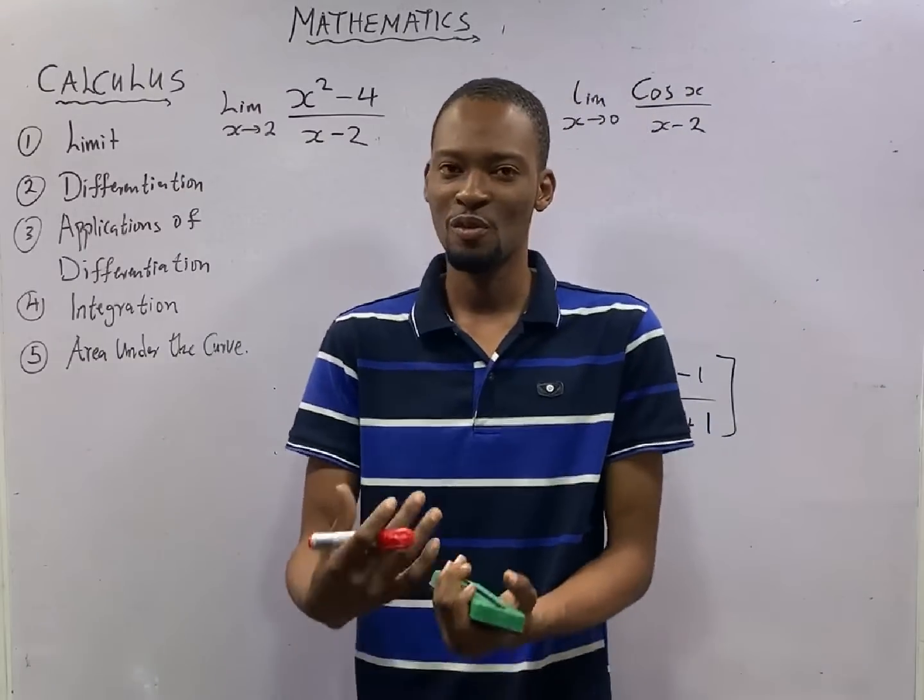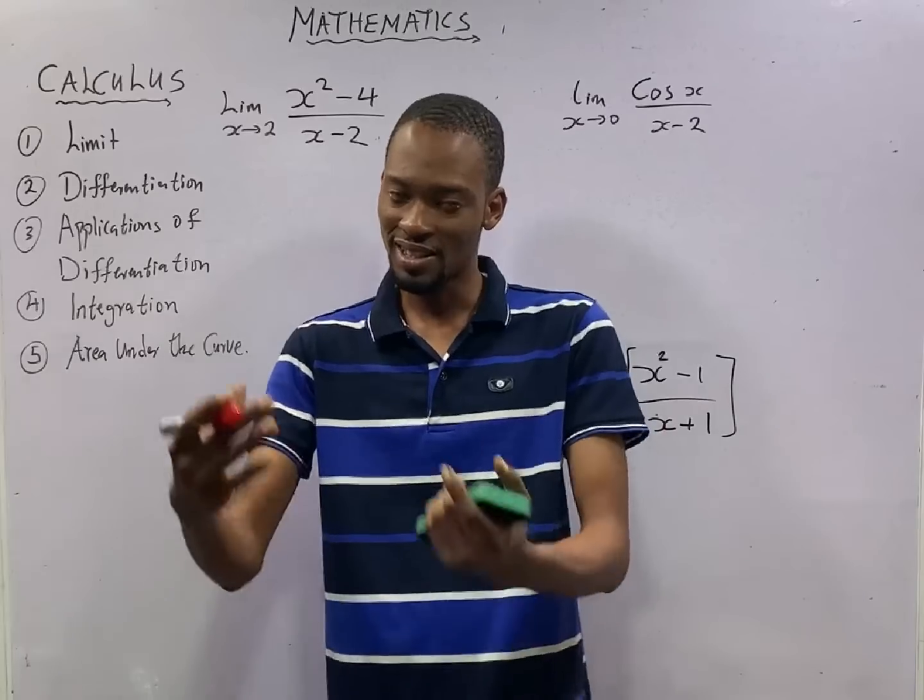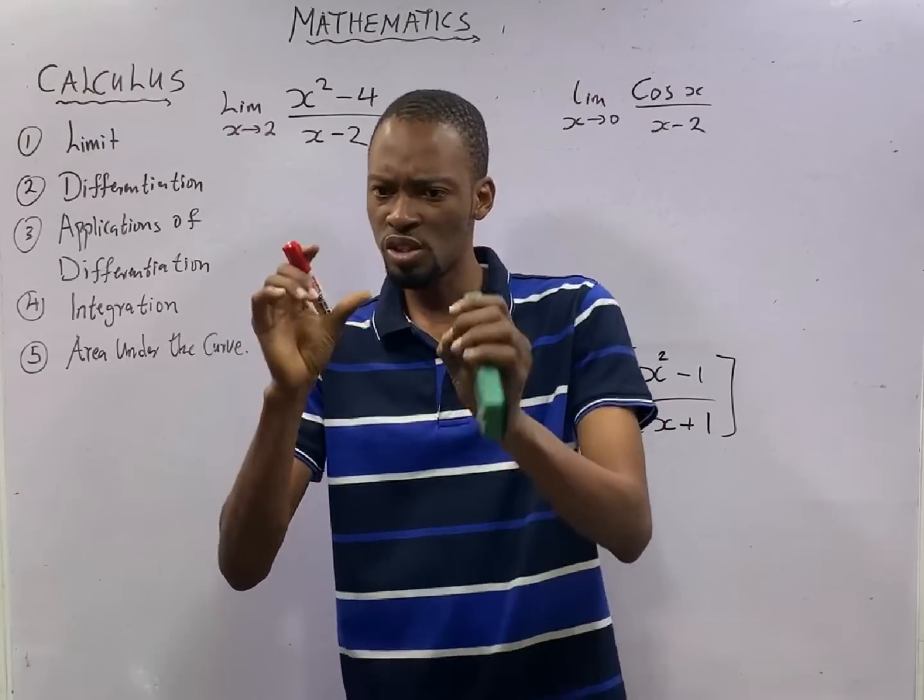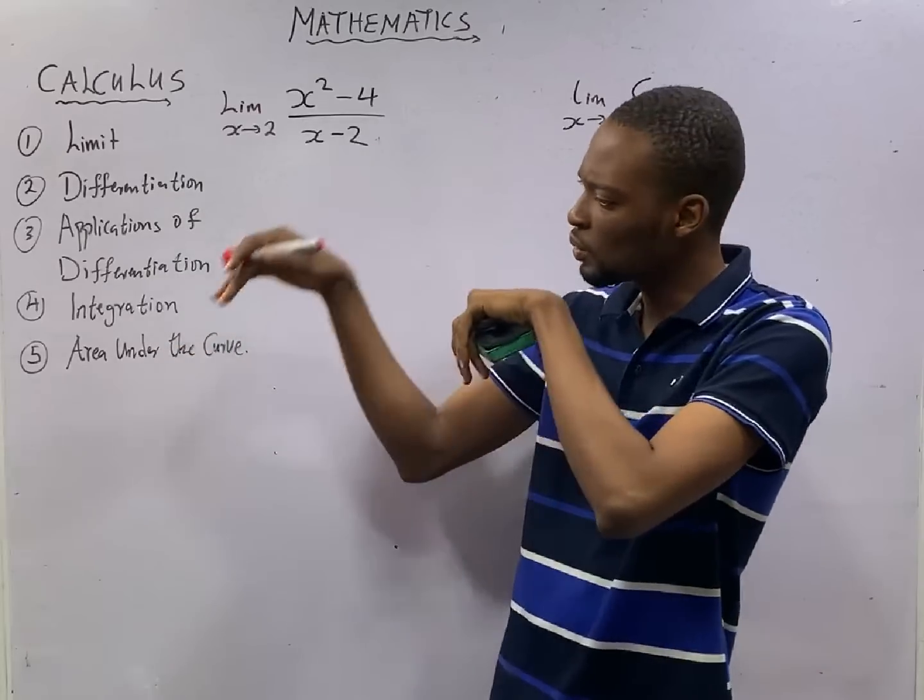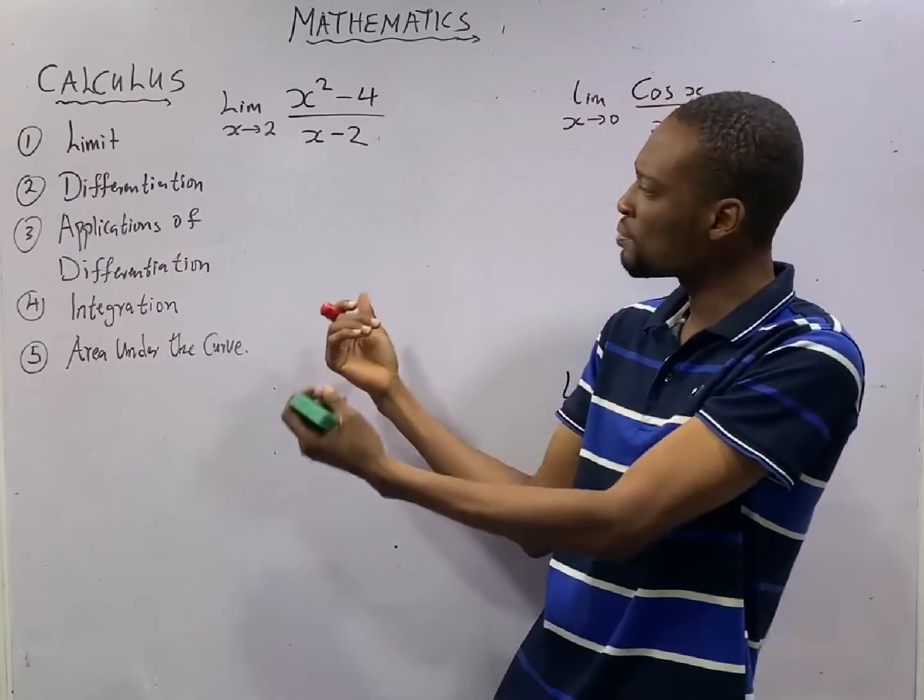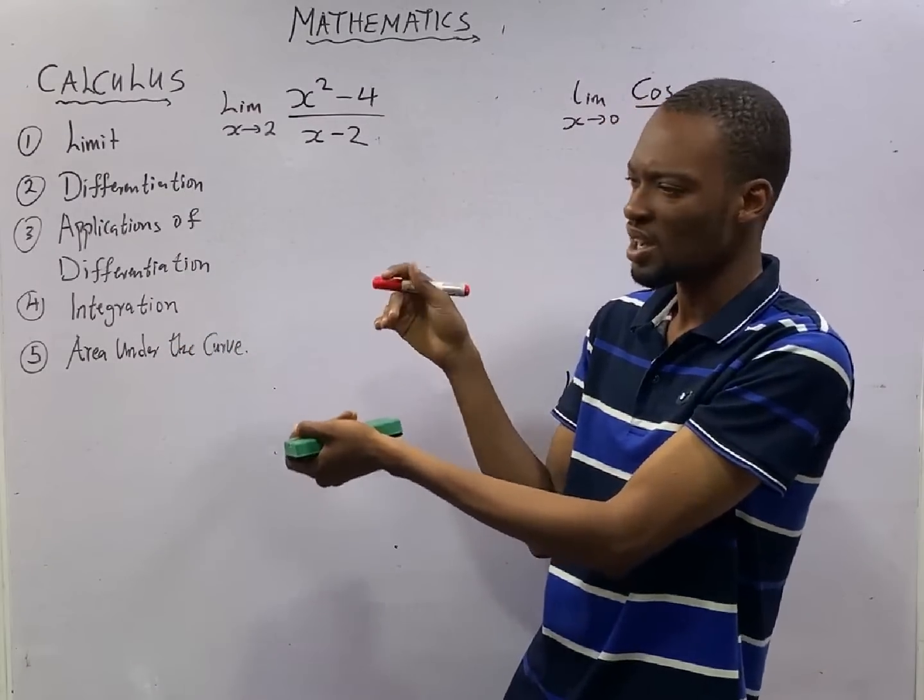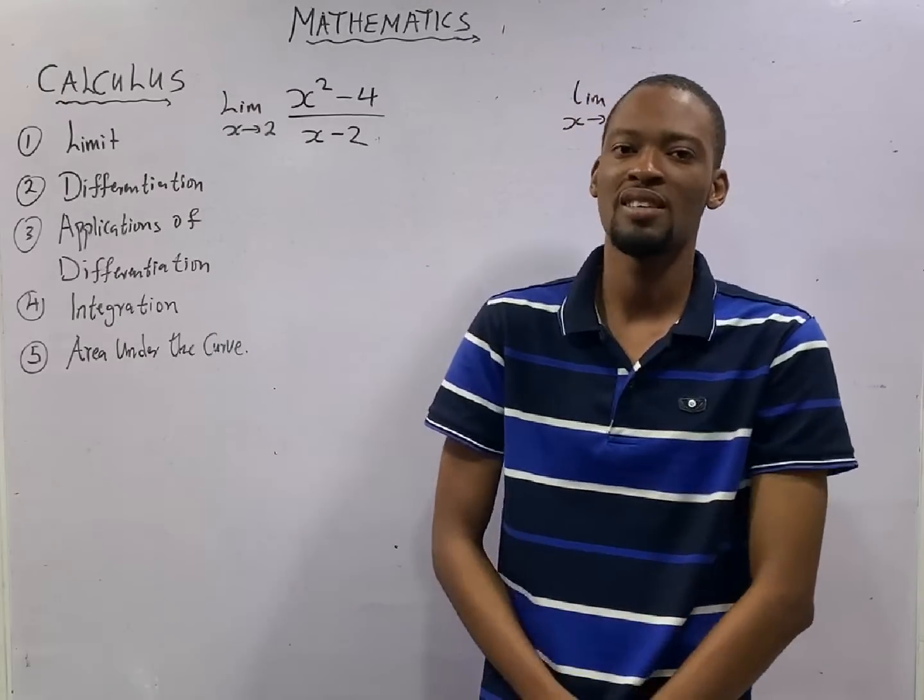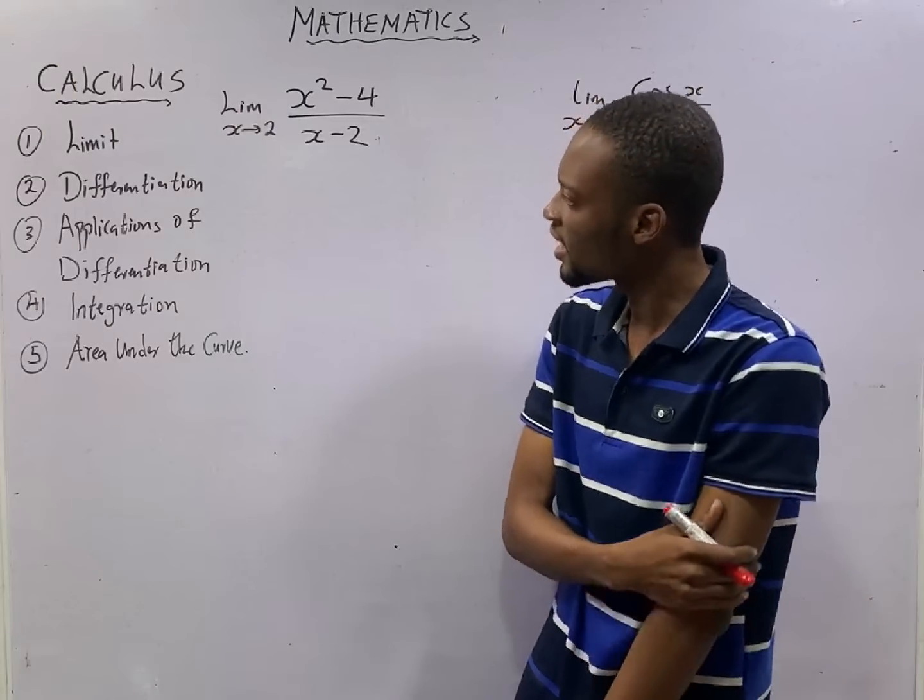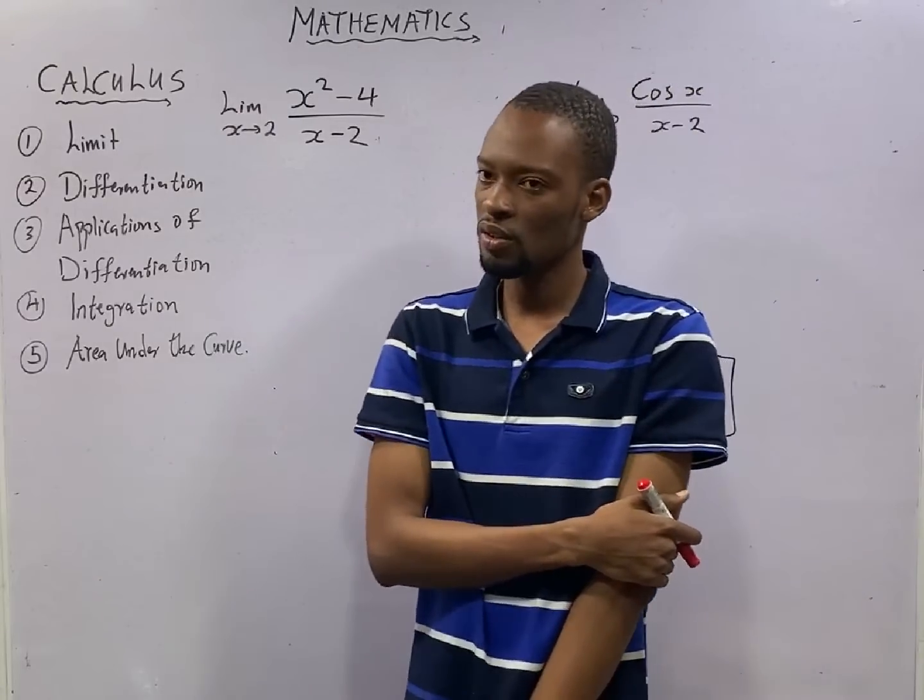Remember, sometimes we cannot figure out things directly. We just know what would happen as we approach, as we go closer and closer. So the limit it can get to as you approach a particular value, that is what we look at under limits of a function. And it is a calculus topic.